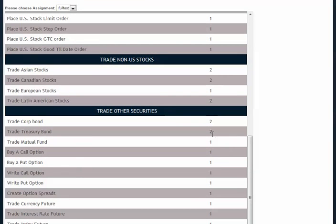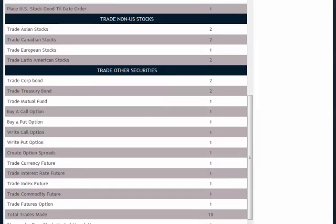This number over here indicates the number of bonds that you want each student to trade. You can also require them to buy a call option, a put option, write calls, write puts, create options spreads, trade currencies, futures, index, indices futures, etc.